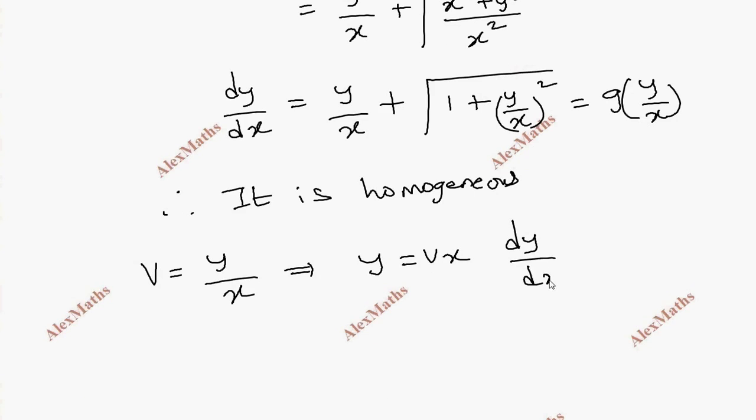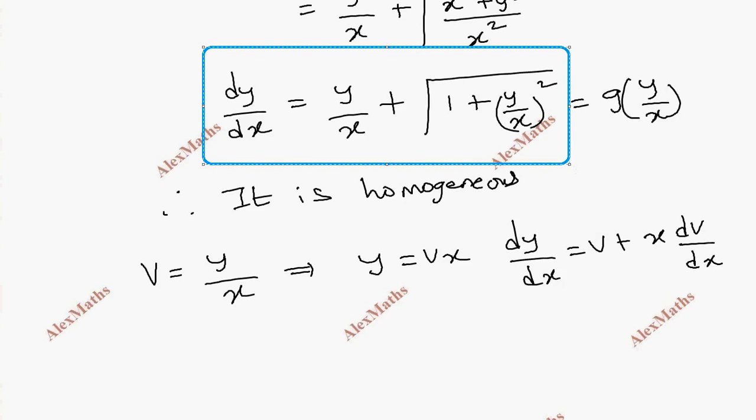dy/dx equals v plus x times dv/dx. Now we can substitute this. So dy/dx, this is v plus x dv/dx, equals y by x.